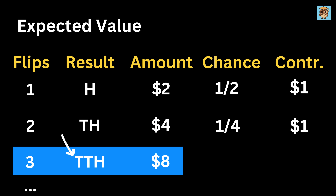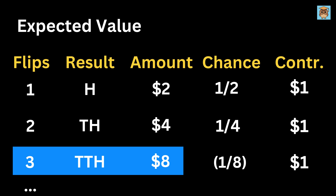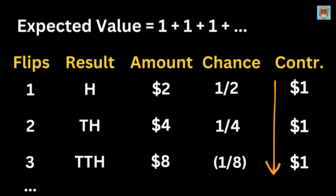If heads appear on the third flip, you win $8. This means you get a tail on the first try, a tail on the second try, and a head on the third try. So the chance of this happening is 1/2 times 1/2 times 1/2, or 1 out of 8. Therefore its contribution is 8 times 1 divided by 8, which is also 1. This pattern continues forever, with each term adding one more to the expected value. Since this sum keeps growing without stopping, the expected value is infinite.